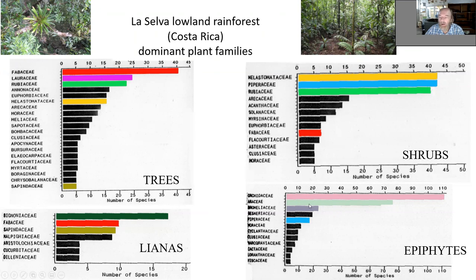Epiphytes are more specialized in terms of taxonomy. They have Orchidaceae as the absolutely dominant family, followed by Araceae and Bromeliaceae, and then Gesneriaceae and Piperaceae. These are less overlapping, although Piperaceae can be both epiphytes and also shrubs, small trees, and climbers.